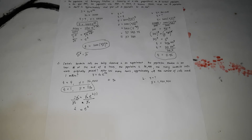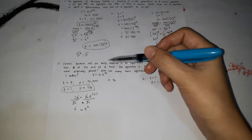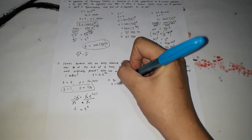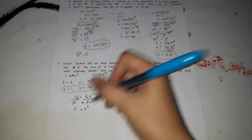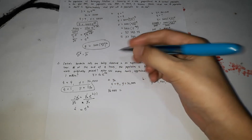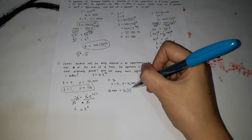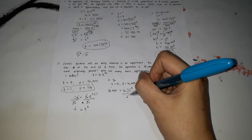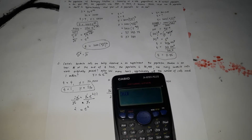Now that we know e^k = 2, we solve for y₀. At the end of 4 hours, y = 36,000, so: 36,000 = y₀ · 2^4. Dividing both sides by 2^4 (= 16): y₀ = 36,000 / 16 = 2,250. So the original number of bacteria cells was 2,250.